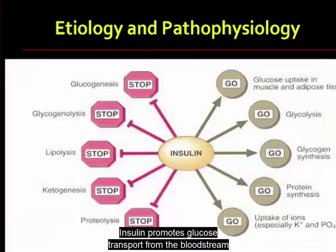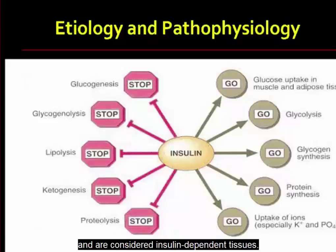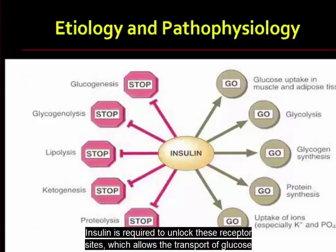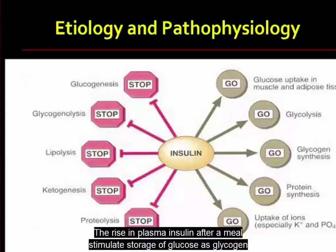Insulin promotes glucose transport from the bloodstream across the cell membrane to the cytoplasm of the cell. The skeletal muscles and adipose tissue have specific receptors for insulin and are considered insulin-dependent tissues. Insulin is required to unlock these receptor sites,